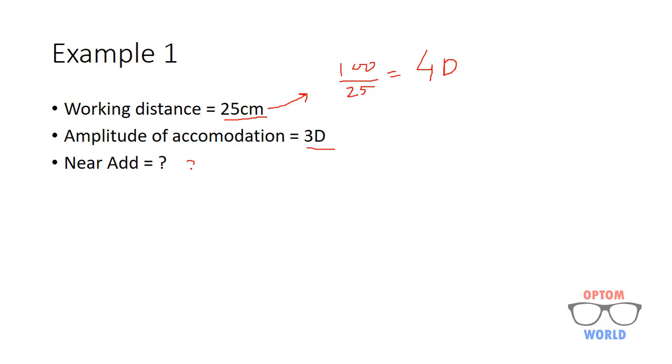The near-add is 2 diopters. But do remember that this is just an estimation. It could be less than 2 diopters or more than 2 diopters depending upon the patient.